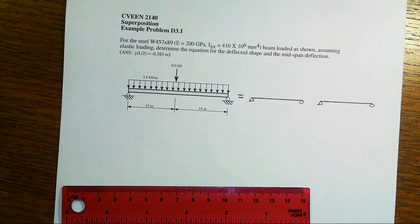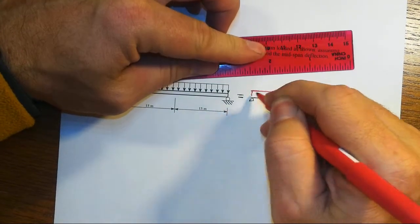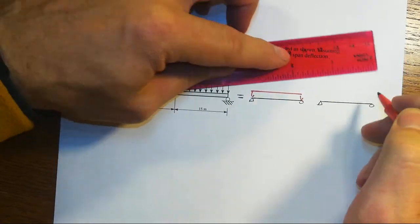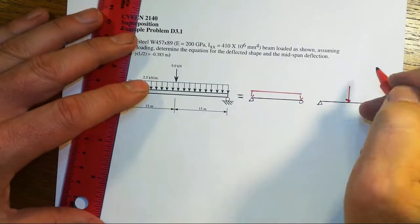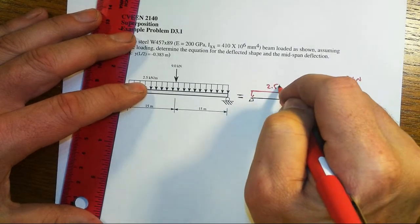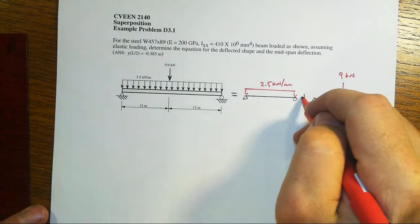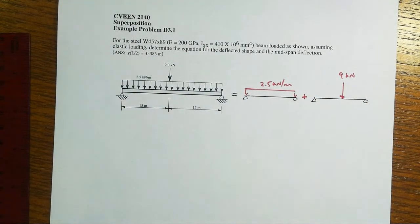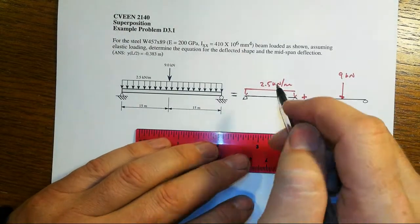And what we're going to do in the superposition approach—superposition is just a fancy way of saying that we're going to add the results of one thing onto another. The structure is going to be the same in every single time. It's going to just be the loading that is going to change. All right, so in this first case, let's just put the distributed load on, and in the second case, we'll put this concentrated force on.